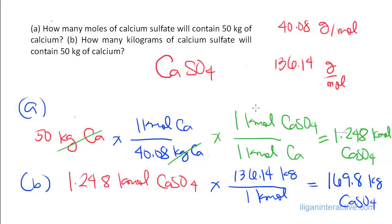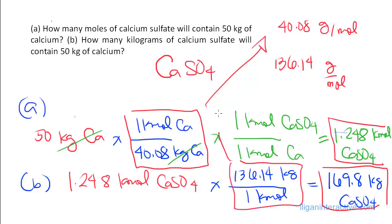So what is important here is that we know when to flip or not to flip the conversion, depending on what we're really looking for. This conversion is from the molar mass of calcium, and this one is from the molar mass of calcium sulfate. The kilomoles calcium sulfate cancels with the kilomoles, leaving us with the kilograms.